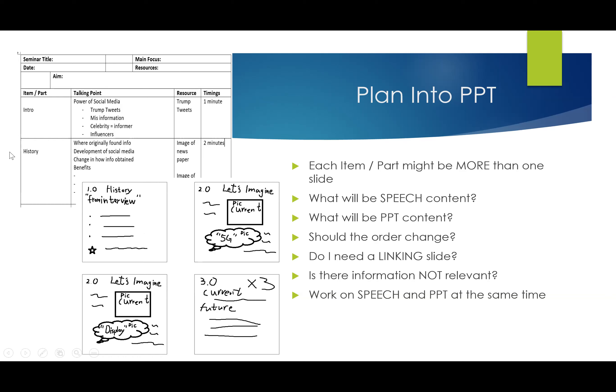Each item or part might be more than one slide. For instance, you can see here I've got 'history' — originally found information, development of social media, change, how information is obtained, and benefits. I would say that this would be two, maybe three slides. I'd start with where it was originated, the concept of social media, then do a timeline about the story of social media's development, and then a different slide with pictures showing different ways we obtain information — a picture of Facebook, Twitter, and WeChat, which is different to newspapers.